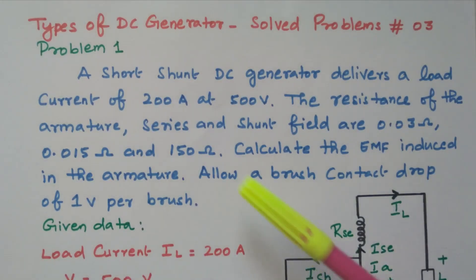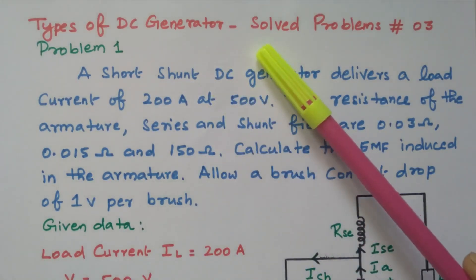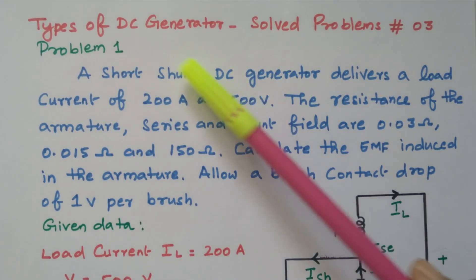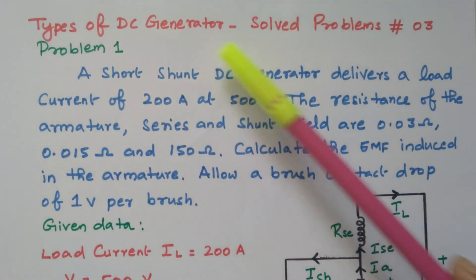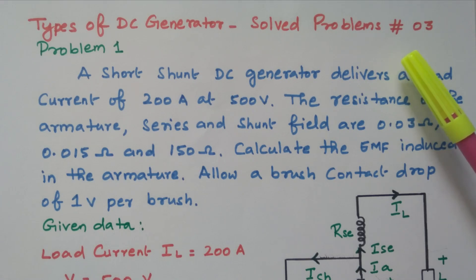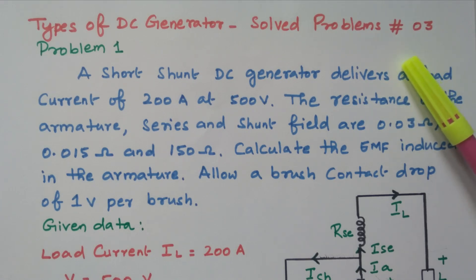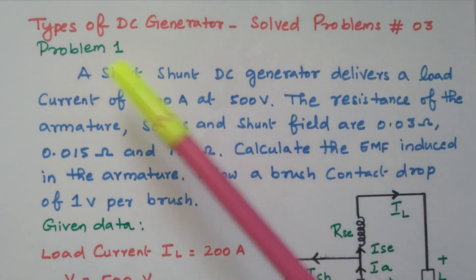Welcome viewers. In this video we will see the solved problem based on the types of DC generator part 3. Subscribe the channel for more videos. Soft copy of this material is available in the drive; the link is given in the description box. Now we will go to the first problem.